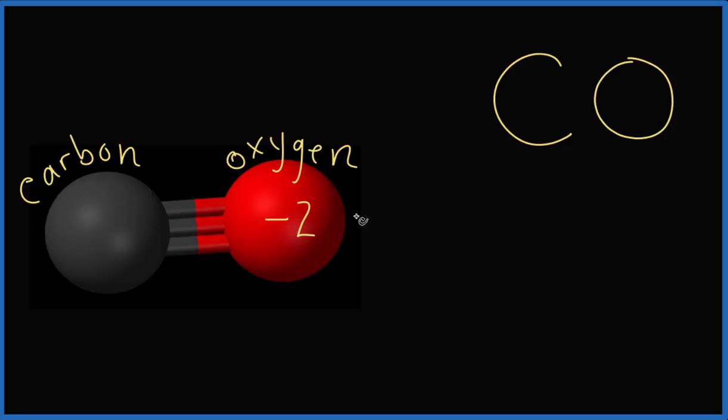So minus two plus something is going to give us zero. Well, plus two and minus two, they cancel out, and that'll give us zero.